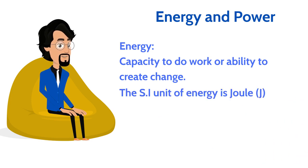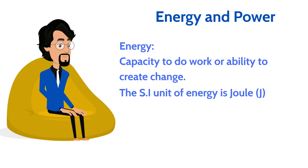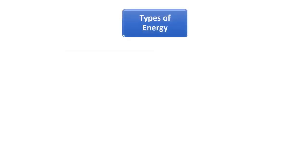The SI unit of energy is the joule. Power is the measure of how quickly energy is used. The SI unit of power is the watt. Now let us see the types of energy.